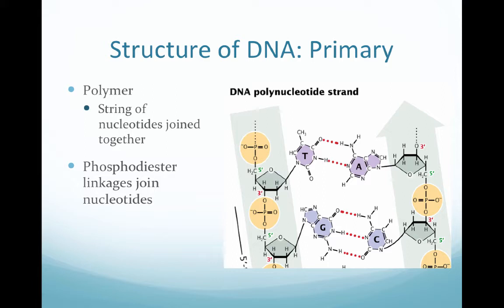The primary structure of DNA is a polymer structure, which is just a string of nucleotides joined together. The things that hold these nucleotides together are phosphodiester linkages. Looking at this figure, the bonding on the left-hand side and the right-hand side is phosphodiester bonding. The red dotted bonding shown in the center of the figure is hydrogen bonding — that's not phosphodiester bonding. Hydrogen bonds are a lot weaker, whereas phosphodiester bonds are very strong and serve as the backbone of DNA.